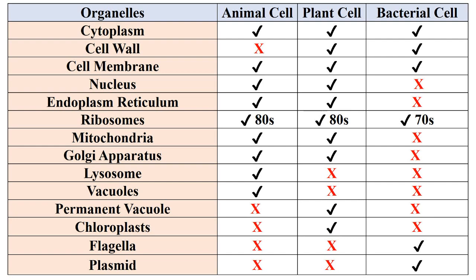Nucleus, endoplasmic reticulum, mitochondria, and Golgi apparatus are found only in animal and plant cells. Lysosome and vacuoles are found only in animal cells. Permanent vacuole and chloroplast are found only in plant cells. While flagella and plasmid are found only in bacterial cells, as mentioned in the next slide.